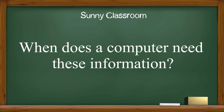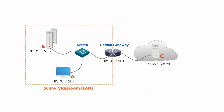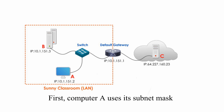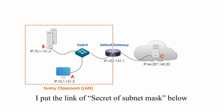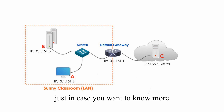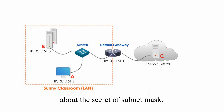When does a computer need this information? Let's take a look at this picture. Computer A wants to communicate with computer B, and meanwhile it also wants to talk with computer C over the internet. Computer A uses its subnet mask to find out that computer B is local and computer C is remote. I put the link to 'The Secret of Subnet Mask' below in case you want to know more.